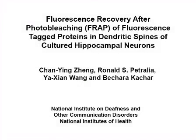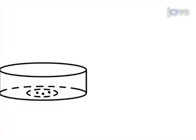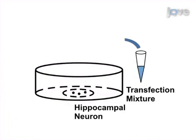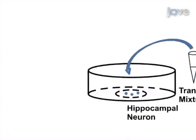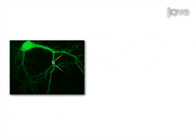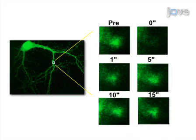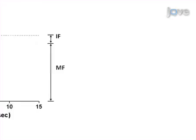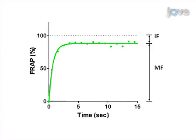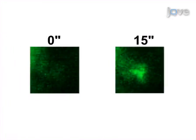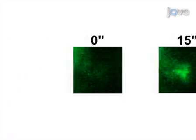The overall goal of this procedure is to determine the mobility of enhanced green fluorescence protein by measuring the FRAP of the protein in a region of interest. This is accomplished by first transfecting the EGFP vector in cultured rat hippocampal neurons. Next, FRAP recording is performed in a spine of interest using a Zeiss 710 confocal microscope. The photobleaching rate can then be calculated using ImageJ and GraphPad Prism software. Ultimately, results can be obtained that show the mobility of EGFP in a spine from a cultured hippocampal neuron through confocal microscopy.